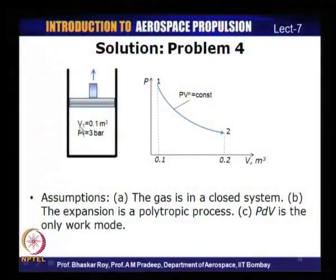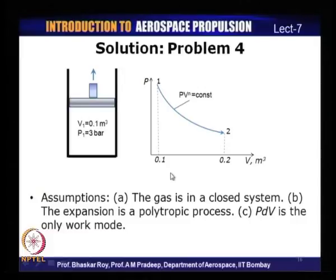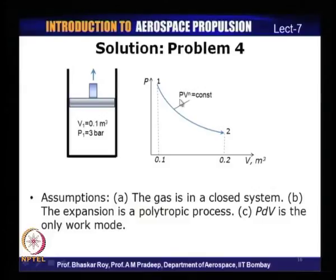Drawing the process: state 1 is at P₁ = 3 bar, V₁ = 0.1 m³; following PV^1.5 = constant expansion, the system reaches state 2 at V₂ = 0.2 m³. Assumptions include quasi-equilibrium, the gas is in a closed system, and the expansion follows a polytropic process PV^n = constant where PDV work is the only work mode. These assumptions are valid for the previous examples as well, as all are PDV work processes.